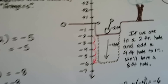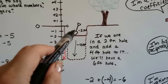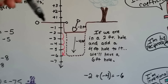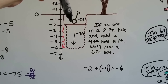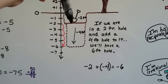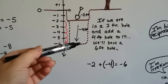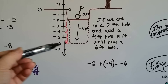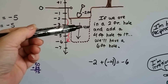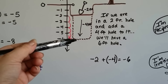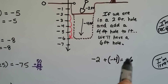Think of it this way: what if we're standing in a two-foot hole? We're two feet below ground, and ground level is zero. We're in this two-foot hole and we dig down another four feet. Where are we? We're at negative six — because we had a two-foot hole and added a four-foot hole, making a negative six-foot hole. So negative two plus negative four equals negative six.